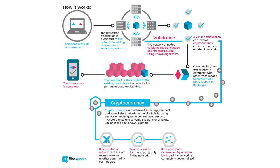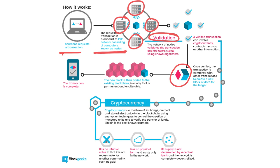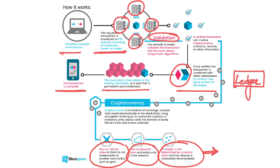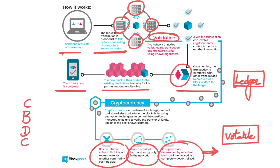This is the schematic diagram: if someone sends a request, that request moves through the network nodes, which are computers connected to the network. Each node validates, and after validation this block of information is added to the ledger. When validated by the nodes, the transaction happens and the person receives the money or document. Cryptocurrencies have no intrinsic value, no physical form, and their supply is not determined by central banks — it is determined by crypto mining. That is why the prices of cryptocurrencies are very volatile, and many countries are trying to bring in central bank digital currency (CBDC). Even RBI is thinking of bringing in CBDC.